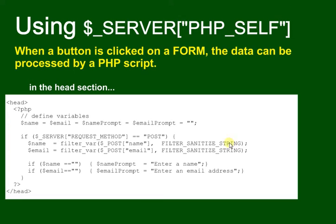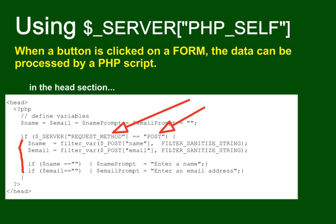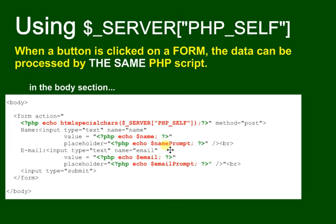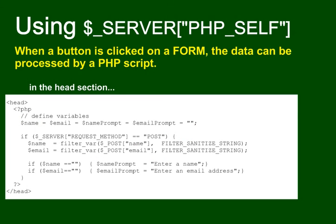Then we ask the question: has the button been pressed — has a POST been initiated? We check the request method: if there has been a POST request to the server, it will execute the code inside the if block. If not, it will ignore all of that, carry on, and just show an empty form — because all variables were initialized to empty.